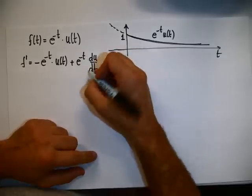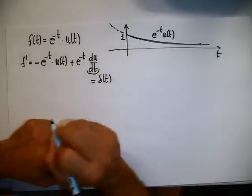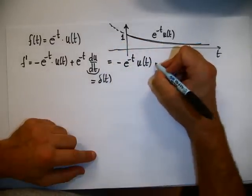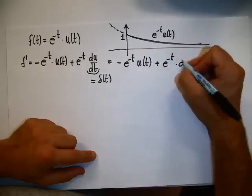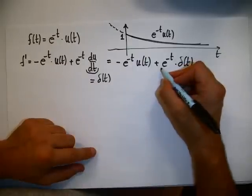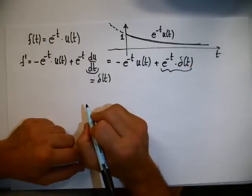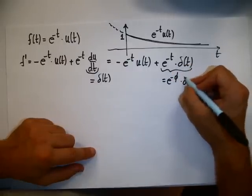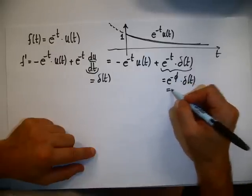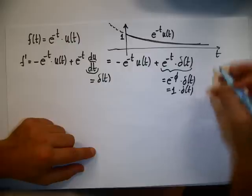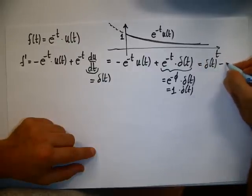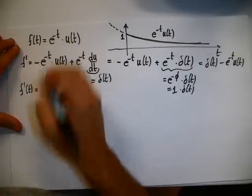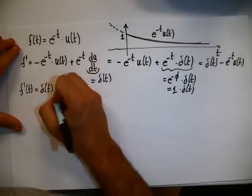Now, we know that du/dt equals the Dirac delta function. So we get minus e^{-t} u(t) plus e^{-t} times δ(t). Now I can use the localization property of delta that I showed before. So this equals e^{-t} evaluated at zero times δ(t), which is basically equal to one times δ(t). So we get δ(t) minus e^{-t} u(t). By these formal calculations we show that the derivative equals δ(t) minus e^{-t} u(t).